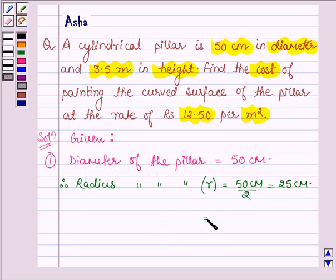Since 1 cm equals 1/100 m, we have 25/100 m, which equals 1/4 m. This is the radius of the pillar.